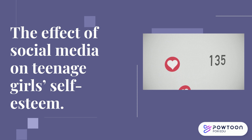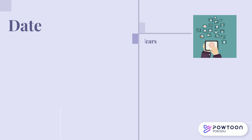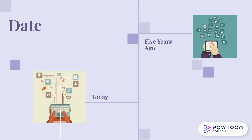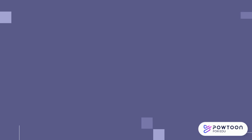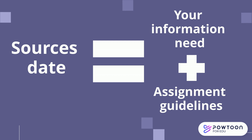In this last example, imagine you are researching the effect of social media on teenage girls' self-esteem. You would most likely want to focus your results on the last five years since social media and teens' use of social media is constantly changing, and sources published more than five years ago may be considered outdated. The appropriateness of a source's date will always be different depending on your information needs and the assignment guidelines.